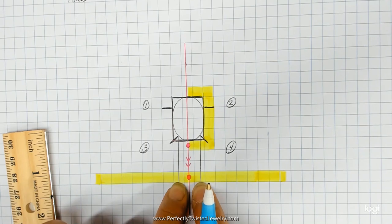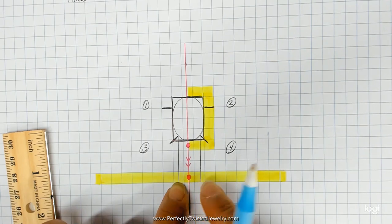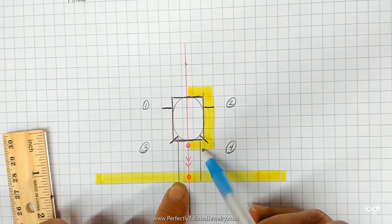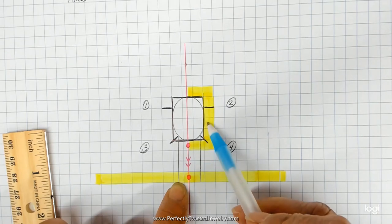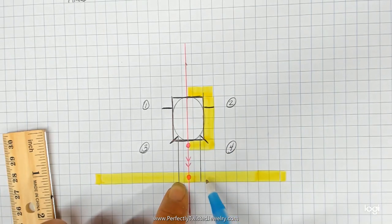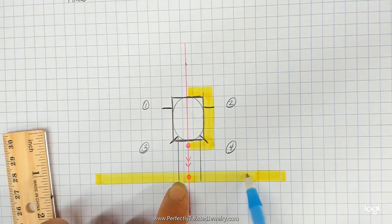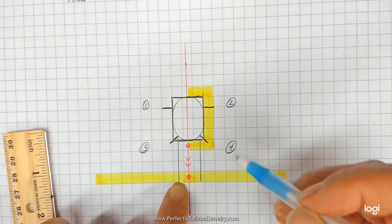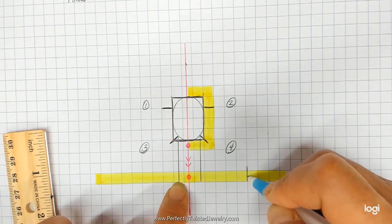From here, I can proceed to count squares. Half a square, one, two, three, four. Half a square, one, two, three, four. And then I can make my mark for my prong number two.